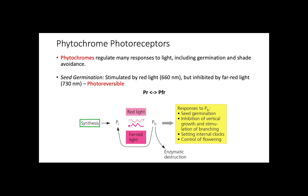First, let us be clear that responses to red and far red light are photoreversible, meaning that the responses to one wavelength can be reversed by exposing the plants to the other wavelength. Upon photoreceptor synthesis, the red-absorbing form of a phytochrome, or PR, absorbs red light. This is then converted to the far-absorbing form, or PFR, which absorbs far red light. In the PR form, seed germination is stimulated. That is why red light initiates the stimulus by converting the phytochrome PR to PFR.